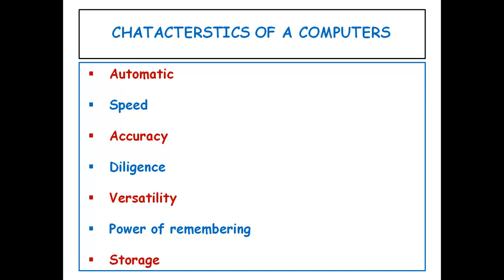Coming to the different characteristics of computers — those are: automatic, speed, accuracy, efficiency, diligence, versatility, power of remembering, and storage. A computer is an automatic machine that works by itself without human intervention. Once started on a job, it carries out the job until it is finished, normally without human assistance. However, computers cannot start themselves or find their own problems and solutions — we need to instruct a computer using coded instructions that specify exactly how it will do a particular job.